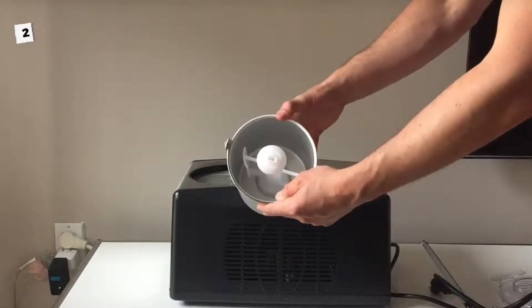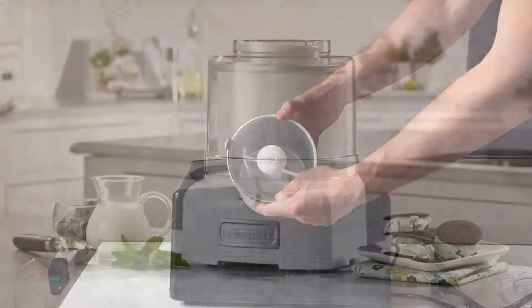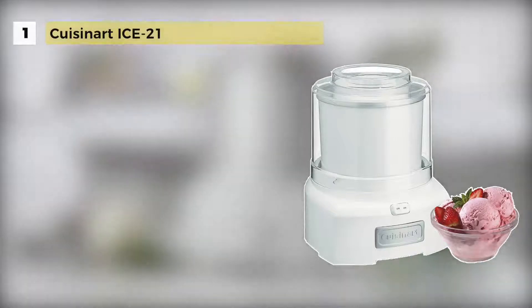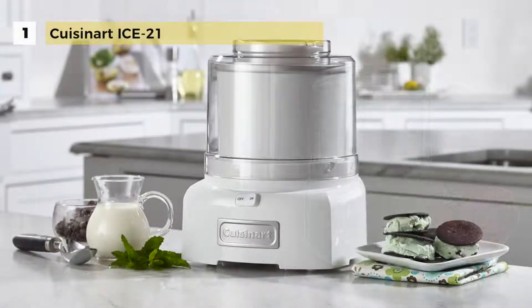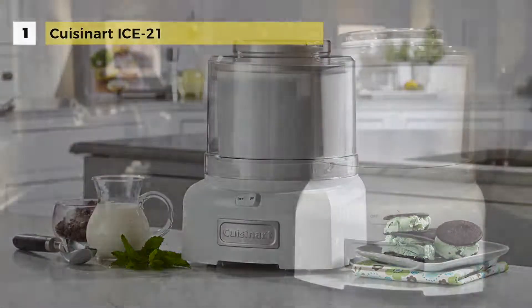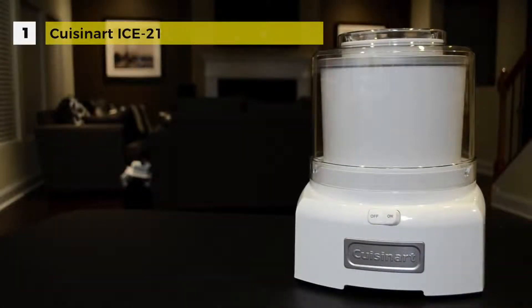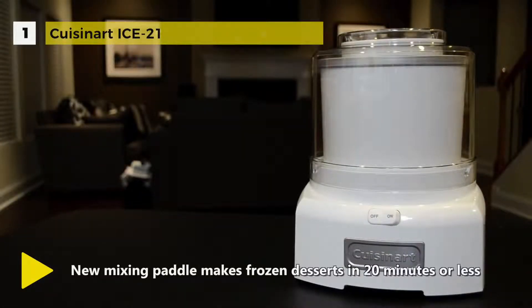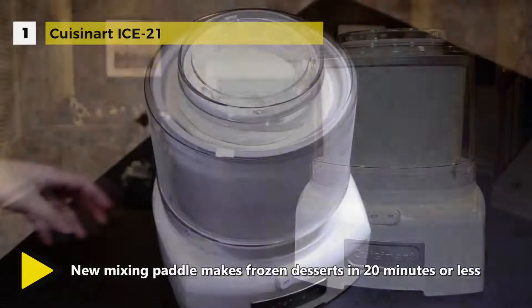Number one is the Cuisinart ICE-21. It comes with plenty of power and can create fresh frozen treats in less than 20 minutes. It has an advanced paddle design that maximizes the mixing process in larger batches of one and a half quarts at a time. Thanks to the double insulated freezer bowl, its heavy-duty motor and paddle make it fast.